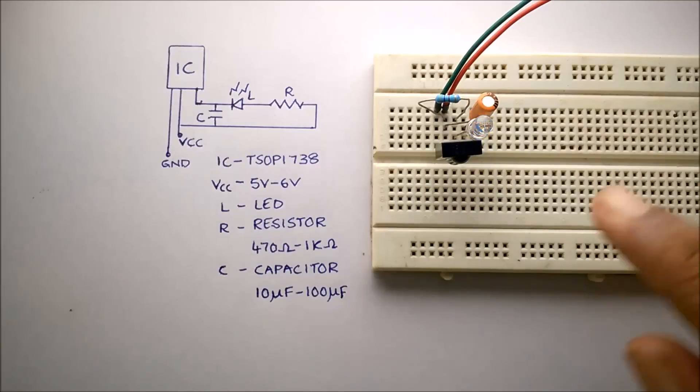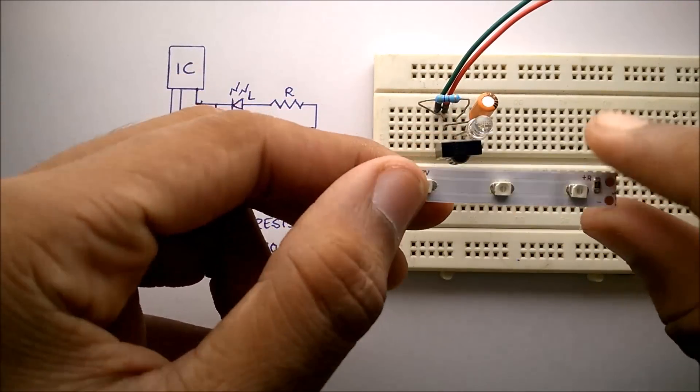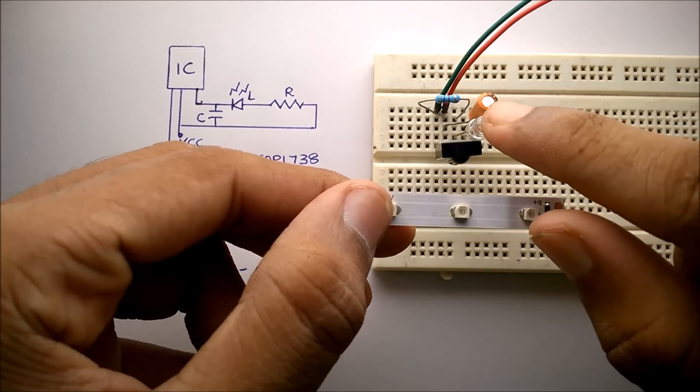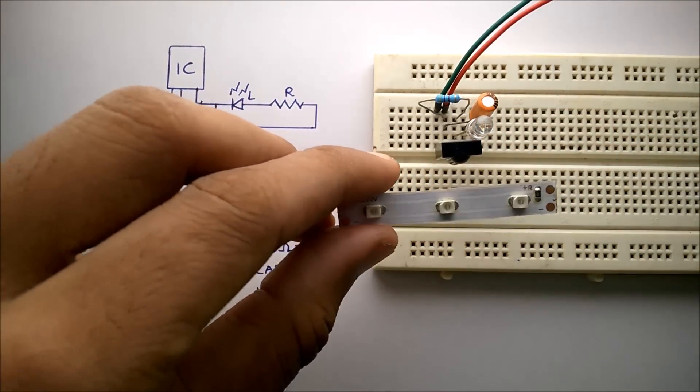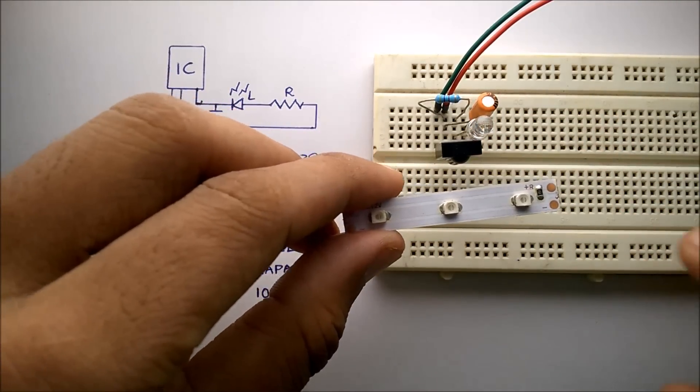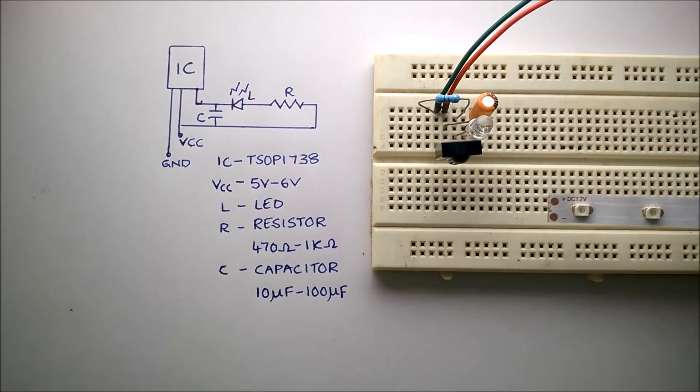You can take this circuit a step further by placing LED strips in place of this small LED. And you can use this near your television set so that whenever you press the remote control, the lights will glow, and that will be cool. Thank you for watching this video.